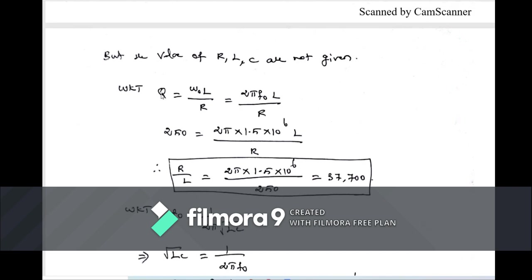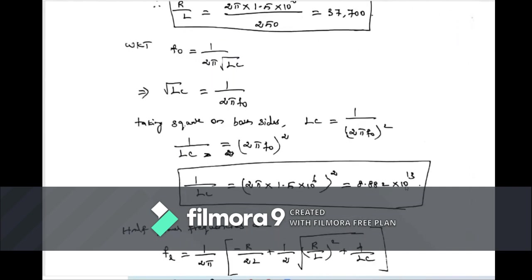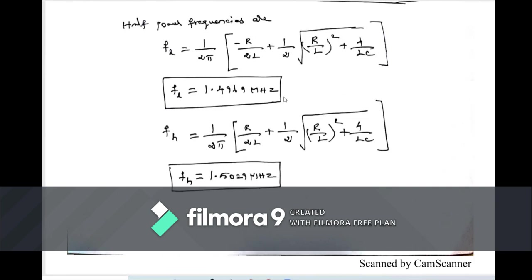In summary: for Problem 4, since R, L, C are not given directly, we derive R/L from the Q formula and 1/LC from the resonant frequency formula, then substitute into the cutoff frequency expressions. These are all very important repeated exam problems. Thank you for watching.